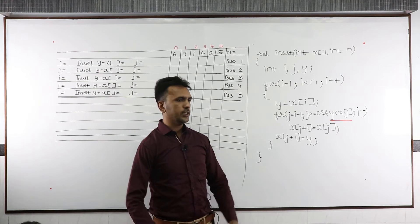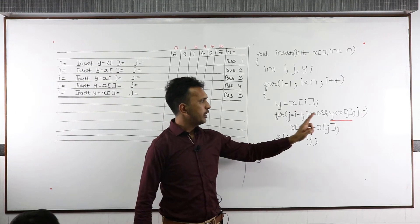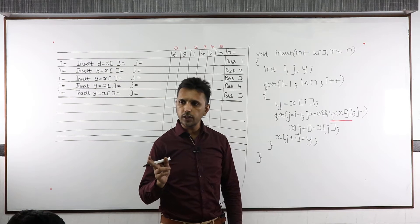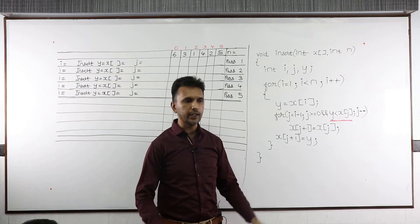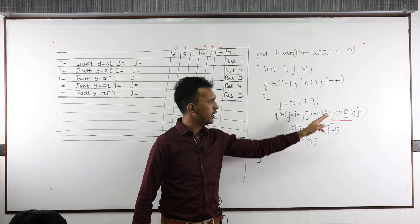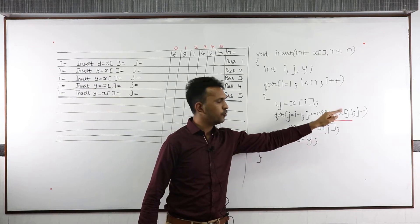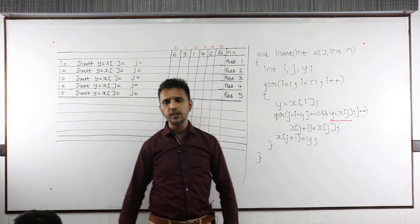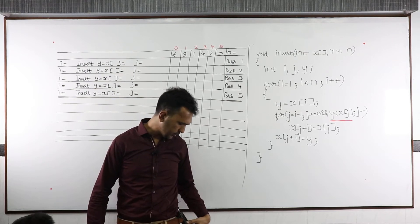Before we forget, just write a small note: if you reverse this condition, the array will get sorted in descending order — right now it will get sorted in ascending order. So write: if it is y greater than x of j, sorting will be done in descending order.